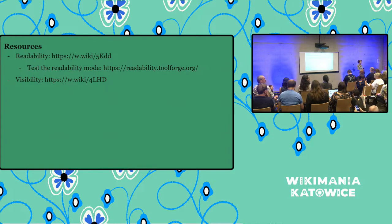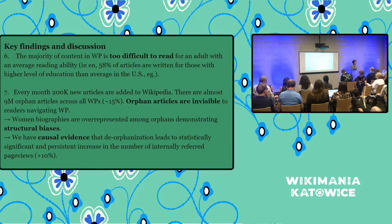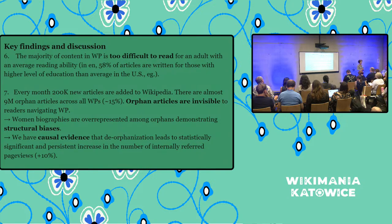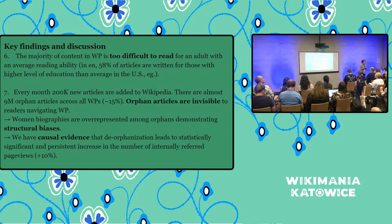Looking at the orphan statistics was really interesting. Biographies of women are something we do a lot of outreach about. This suggests to me that de-orphaning is not currently part of the system we typically use during outreach events — people create a bio and then we kind of leave it there. My question is about the last point where we see an increase in internally referred page views. So if we're going to prioritize the limited and valuable time we have with new editors, I'm trying to get a sense of what percentage of page views are internally referred, to say: is this a better use of time to create an hour at the end of our edit-a-thon to de-orphan?